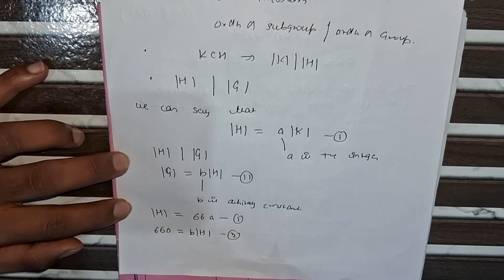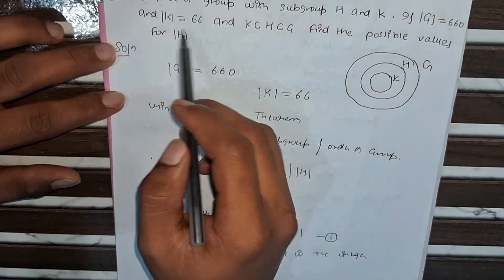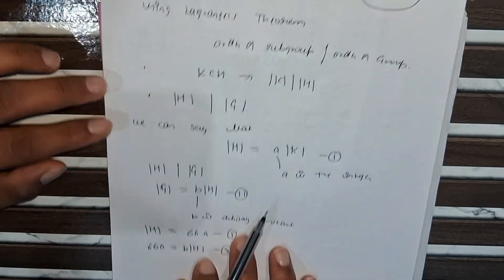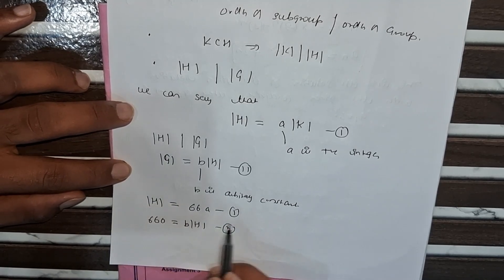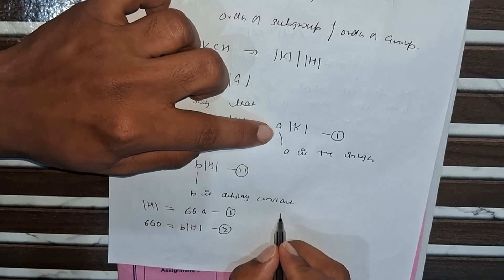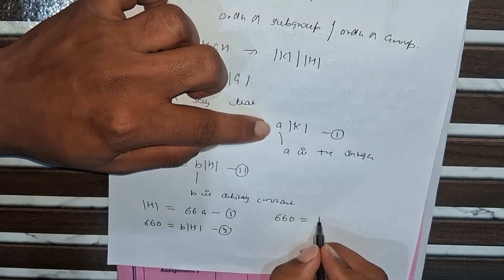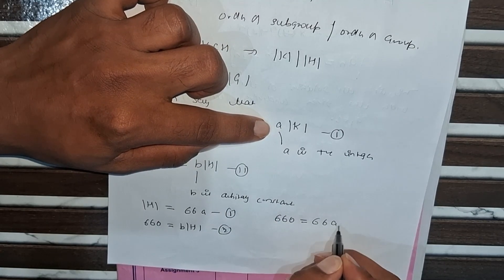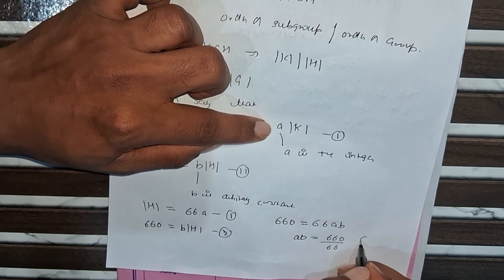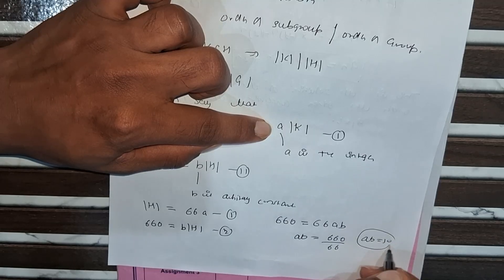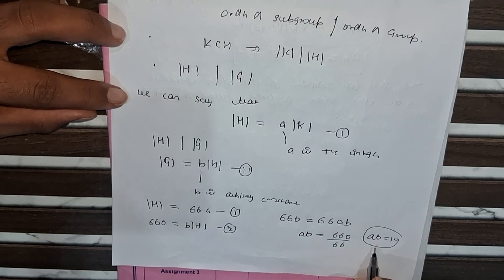Since the order of G is 660 and the order of K is 66, we substitute the order of H from equation 1 into equation 2. The equation becomes: 660 equals 66 times a times b. Therefore, ab equals 660 divided by 66, which gives ab equals 10.